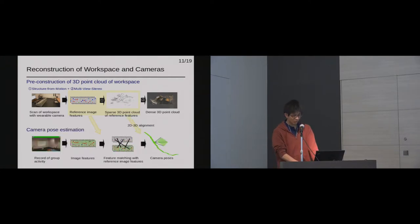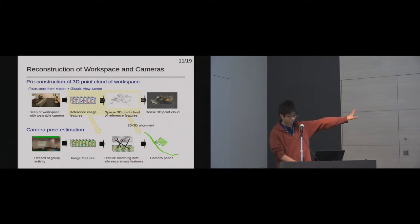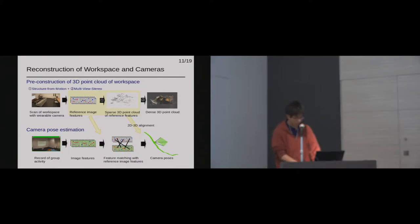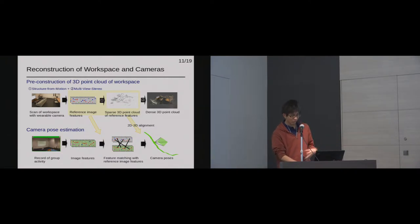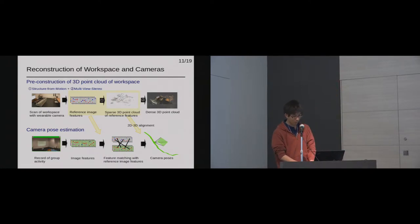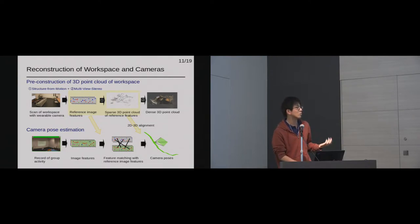Second, we reconstructed the pose of each wearable camera by four steps: recording group activity, extracting image features, and feature matching between new first-person images and reference images which were used for the 3D reconstruction of the workspace. Finally, we obtained the 3D pose of each camera by applying conventional 2D-3D alignment techniques.